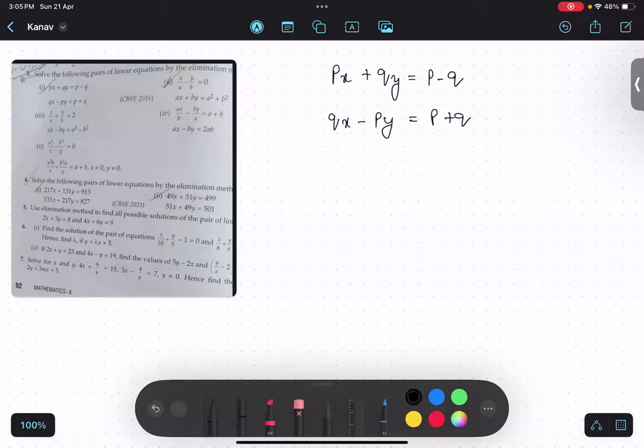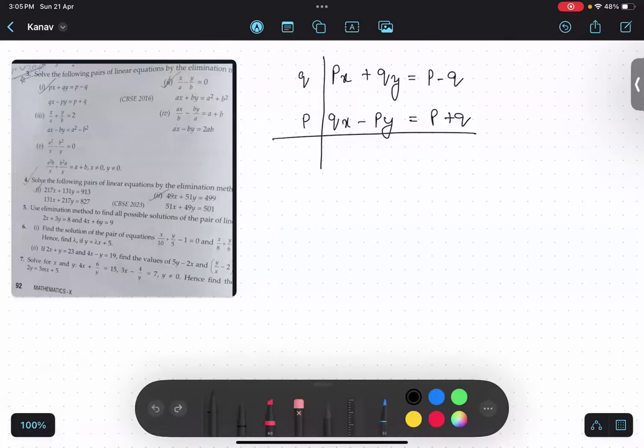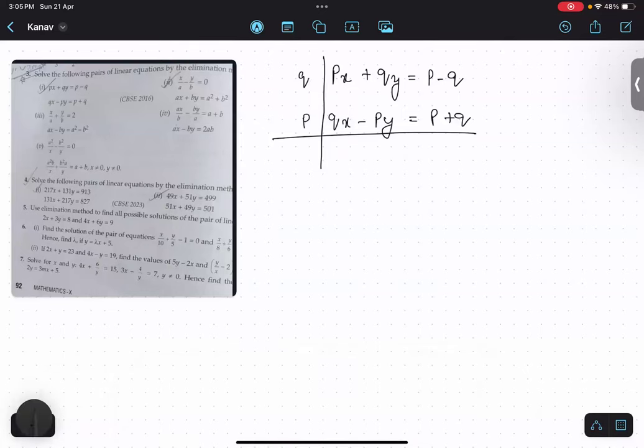Similarly, I would suggest in this question just multiply the first equation by q, second equation by p because of the cross multiplication. Let us multiply. What will happen to the first equation? Multiplying by q: pqx plus q square y equals p minus q square.